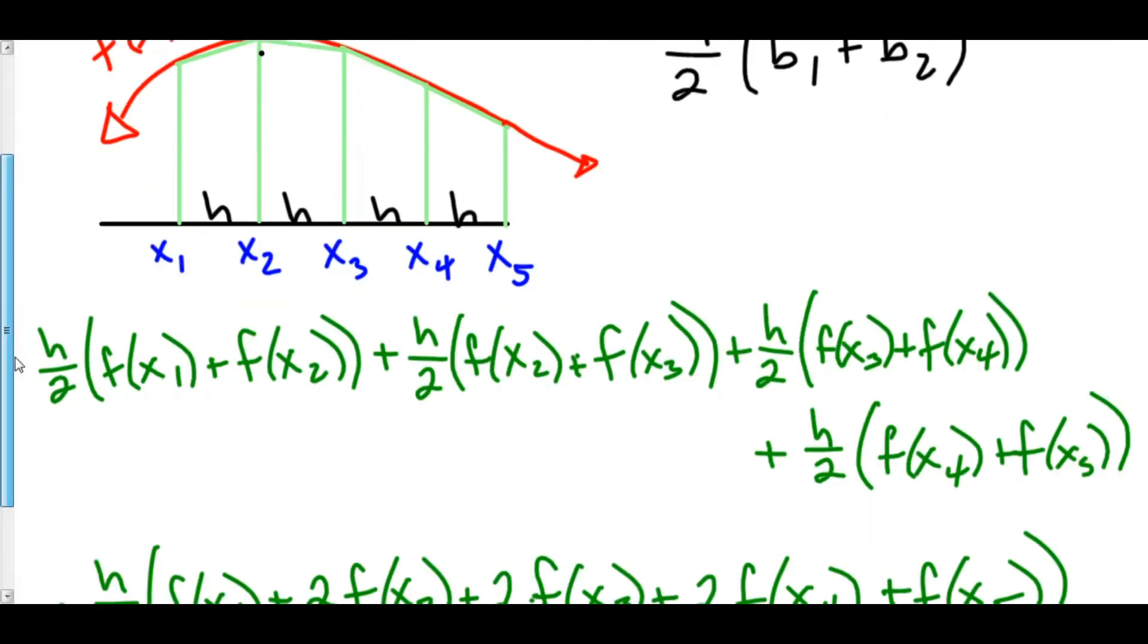And you'll notice here, f of x sub 2 is my b2, and f of x sub 2 is my b1 in my second trapezoid. So when I factored out the h over 2, I have two f of x sub 2s: one from the right of trapezoid 1, and one from the left of trapezoid number 2.